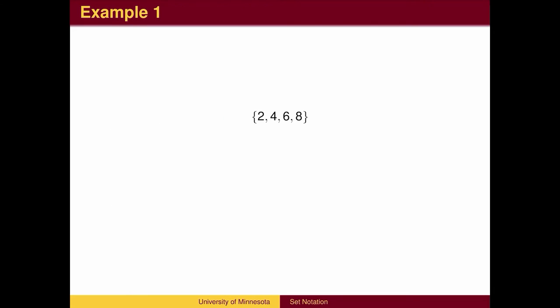In mathematics, we typically are concerned with sets of numbers. For example, here is the set of all positive even numbers less than 10. The elements 2, 4, 6, and 8 are separated by commas and enclosed between squiggly braces. This is one method of defining a set, by making a list of its elements.